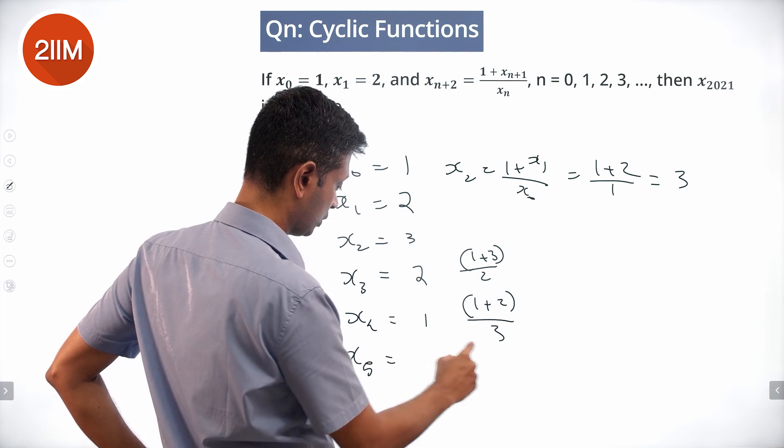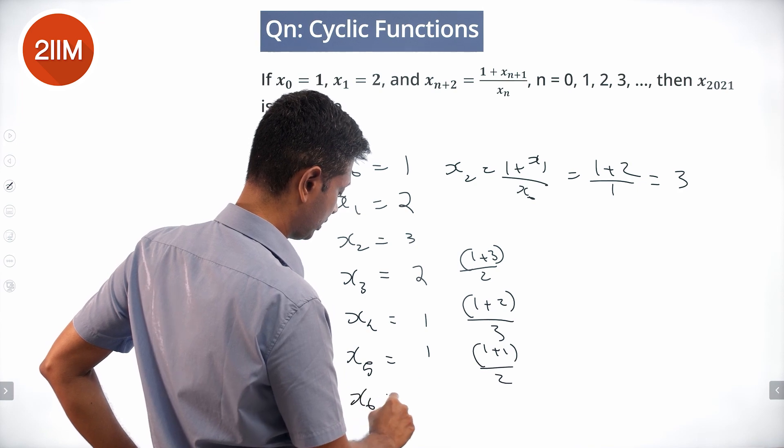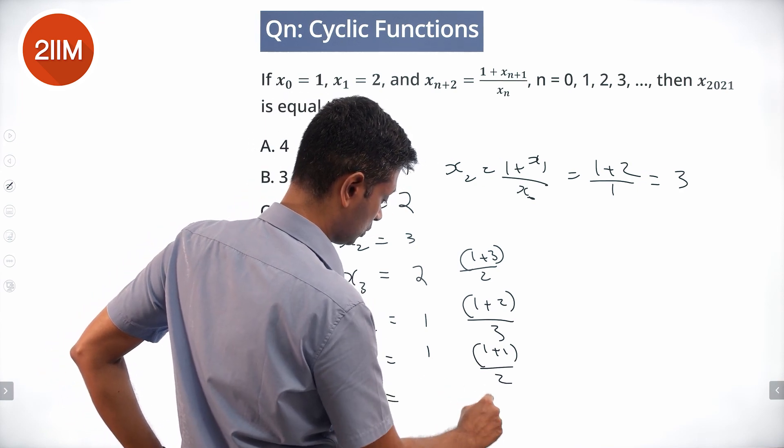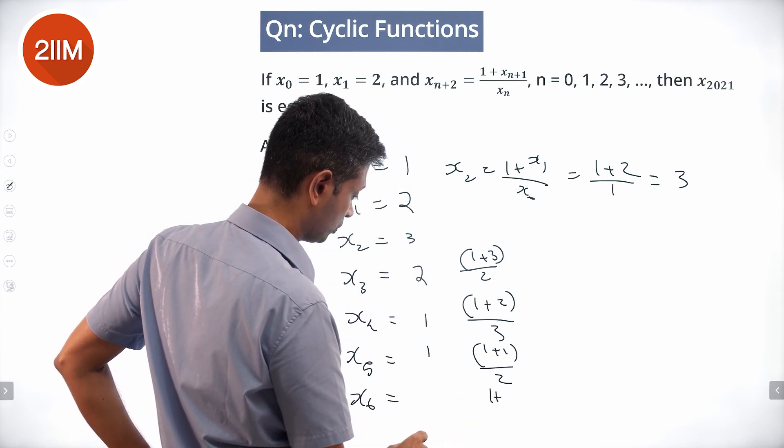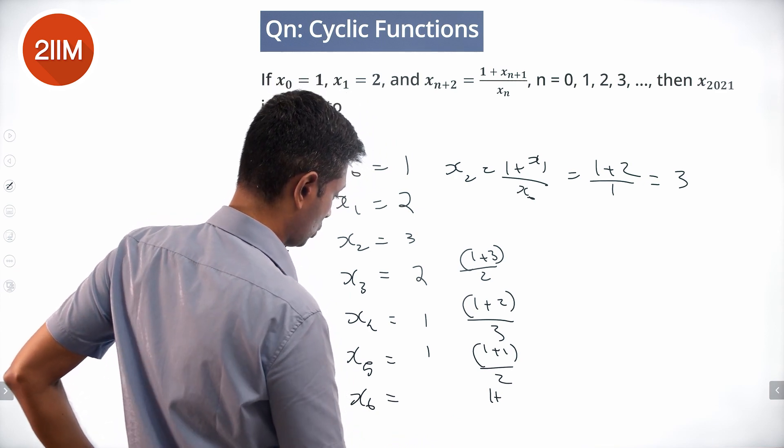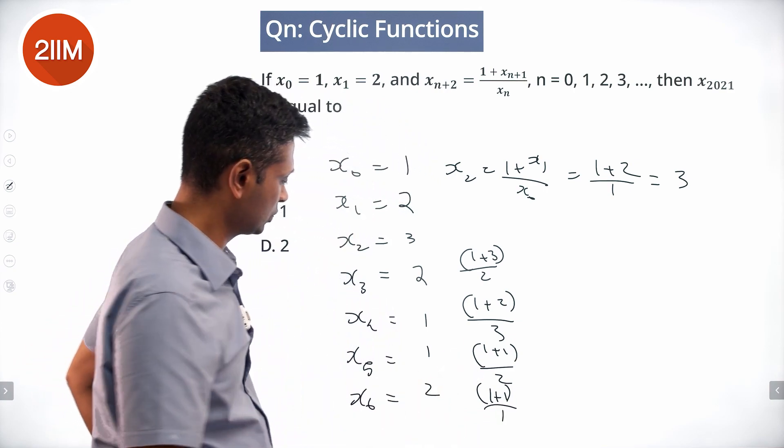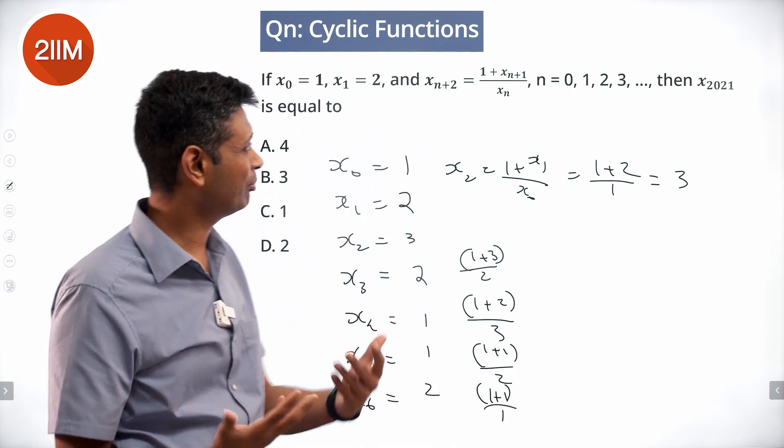x₅: 1 plus 1 by 2, which is 2 by 1, equals 2. And so on. There is some pattern here.